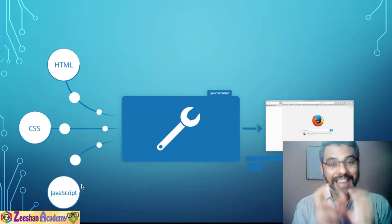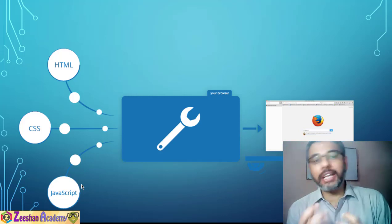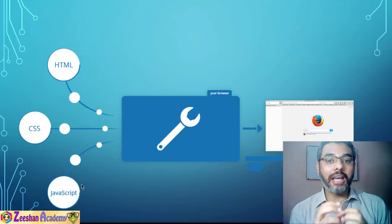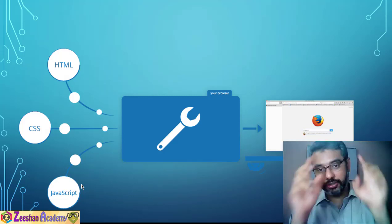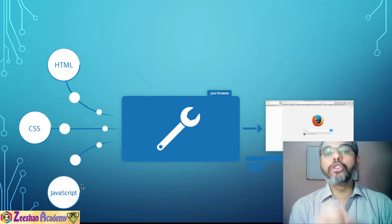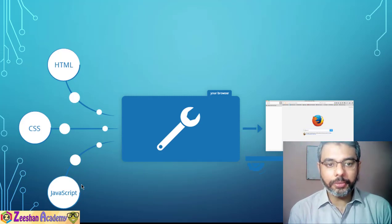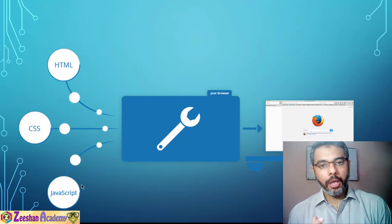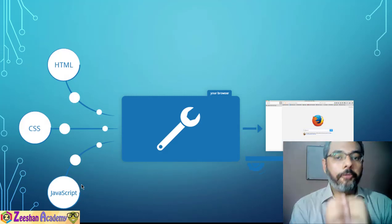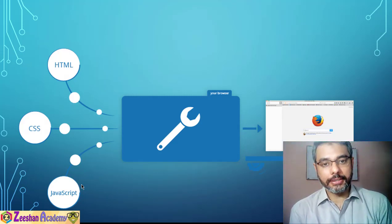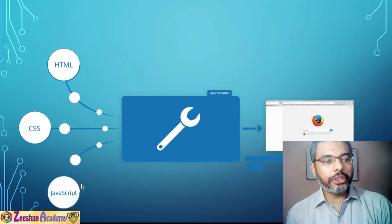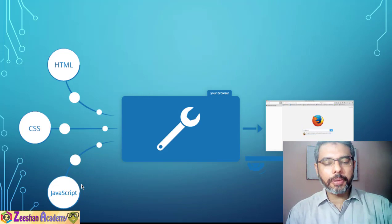HTML is used for content creation and structuring that content on our browser. CSS actually designs that content — how it displays, its user interface, how it's organized on screen. CSS doesn't create or work with data, it only designs it. HTML structures it, JavaScript controls it. JavaScript provides user controls, user validations, and performs some calculations. All three work at the browser level. The back end involves server-side programming like PHP, but we're concerned with HTML, CSS, and JavaScript right now.